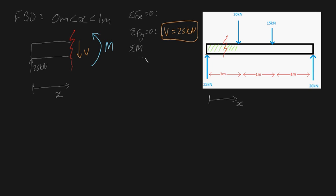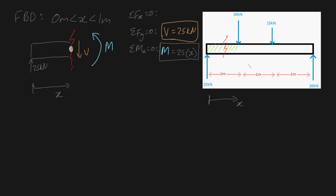Now we use the sum of moments around x equals 0. M is positive by our convention, but the 25 kilonewton force produces a negative torque, so M equals 25 times x. Notice that our moment is actually a function of distance along the bar — the moment increases as we get further along this bar.